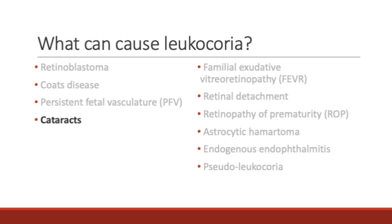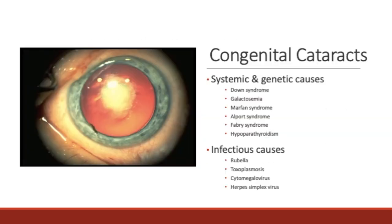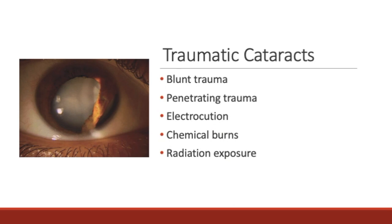Next is cataracts. Cataracts describe the clouding of the lens in the eye. While cataracts are a much more common finding in elderly patients, cataracts in a pediatric patient require additional workup. Congenital cataracts can be caused by certain systemic, genetic, and infectious etiologies, as listed on this slide. If a child presents with congenital cataracts, it is important for the cataract to be removed at the earliest possible age for the patient to develop good visual acuity later in life. Another type is traumatic cataracts, which can arise from blunt or penetrating trauma, electrical or chemical trauma, and radiation. In the picture to the left, you can see the cloudiness in the lens.